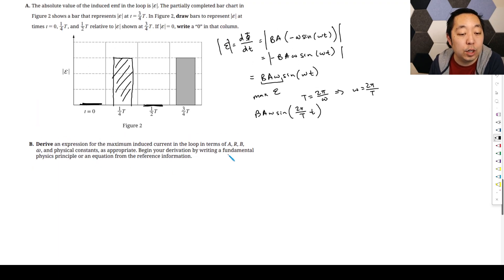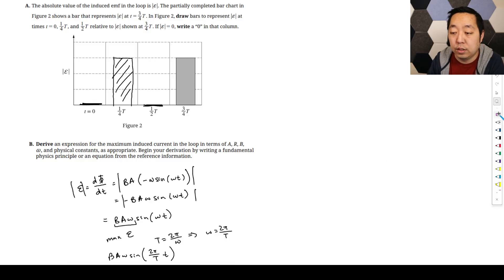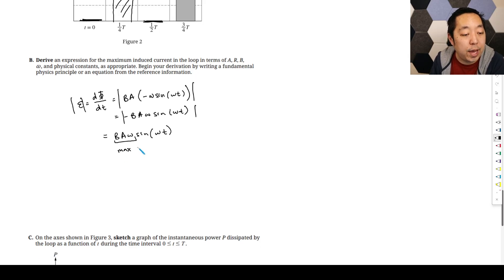Alright, derive an expression for the maximum induced current in the loop in terms of B, A, R, omega, and physical constants as appropriate. Begin your derivation by writing. So we'll start with this. This will be our derivation to begin with. That will be the magnitude of the—and you can use omega. We can leave it as omega here. The max EMF, the max voltage, is equal to BA omega. That's what we derived here from here.